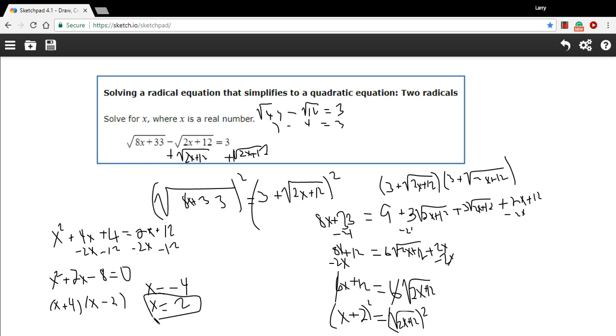Let's try the negative 4. So, negative 24 plus 33 is going to be 9, so square root of 9 minus, and that's negative 8 plus 12 is going to be the square root of 4 equals 3. And that comes out to 3 minus 2 equals 3, and that is not true. So, this is an extraneous solution. So, our one solution we got here was x equals 2.